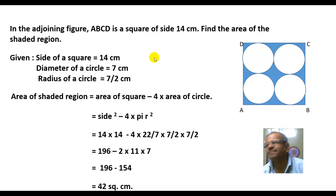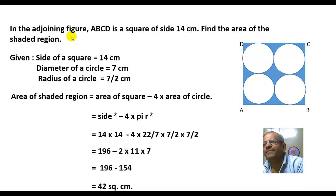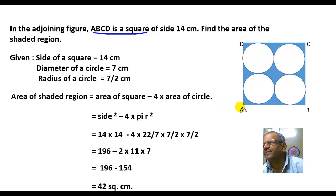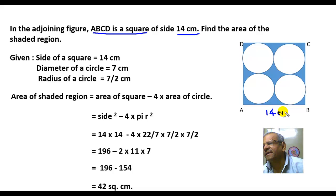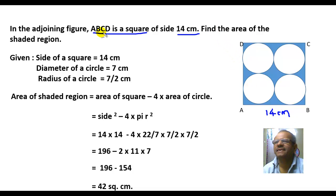Another question: in the adjoining figure, ABCD is a square of side 14 centimeters. We have to find the area of the shaded region.